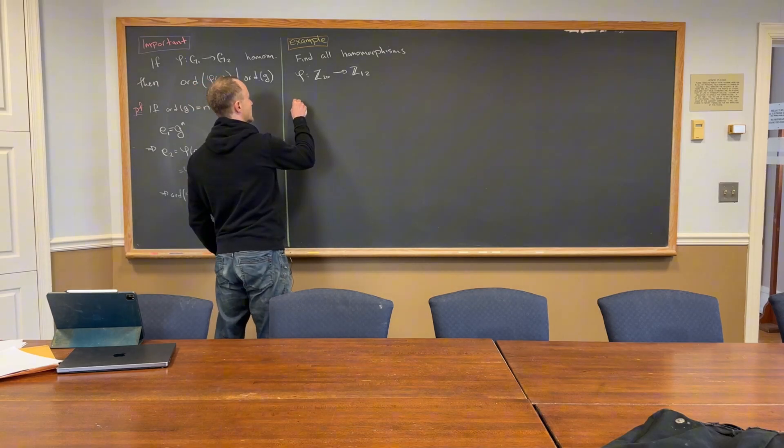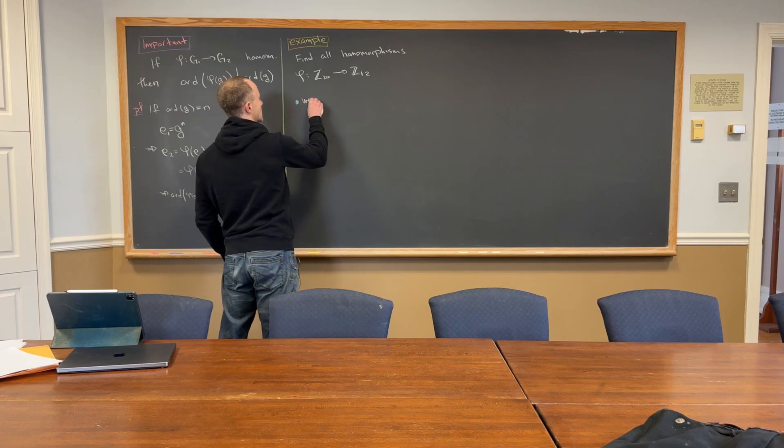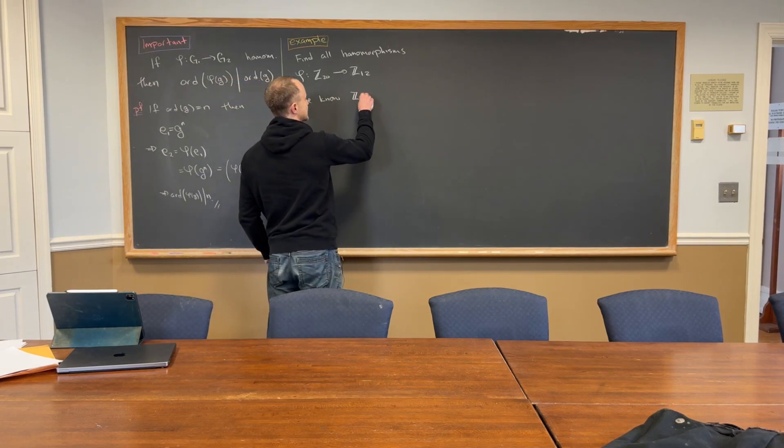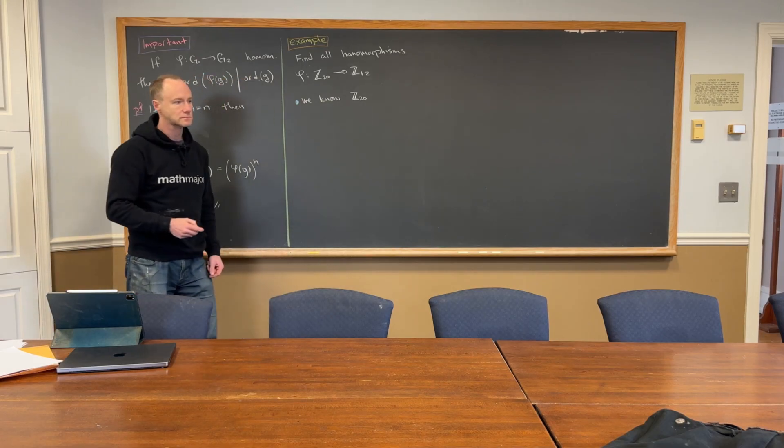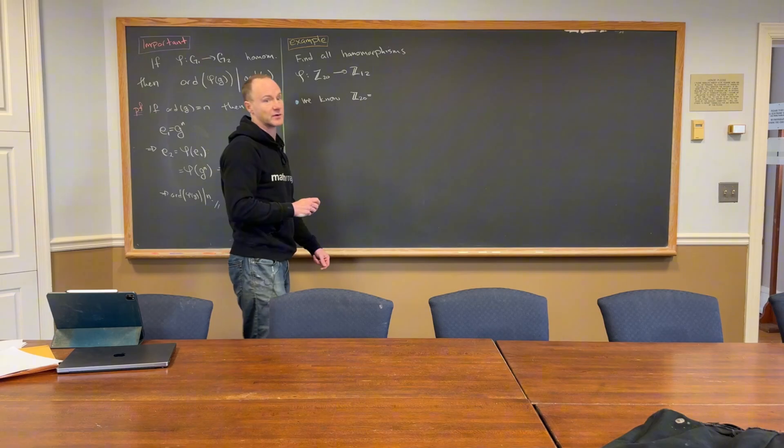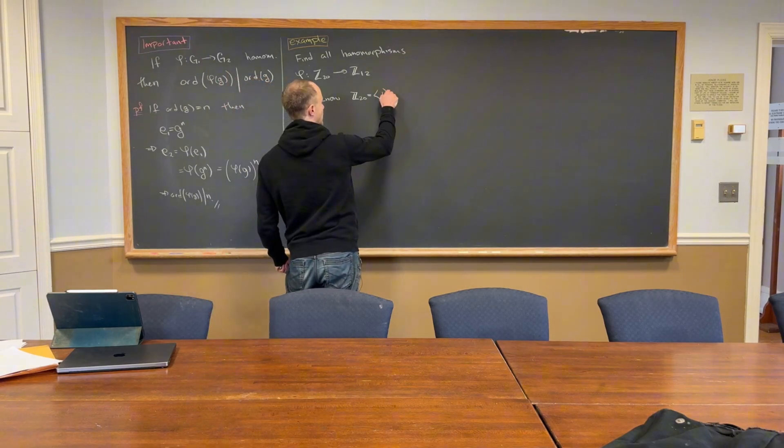So what I want to take advantage of about the domain is that we know that Z20 is a cyclic group, right? Yeah, it's like a prototypical cyclic group, and it's generated by one.